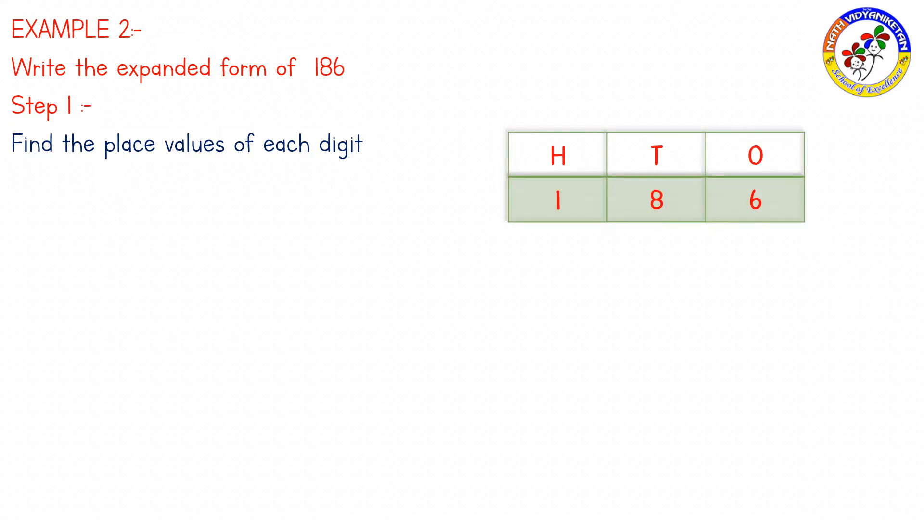Let us see example 2. Write the expanded form of 186. First step initially, we have to write the place values. Find the place values of each digit. 6 is in 1's place, 8 is in 10's place, 1 is in 100's place.